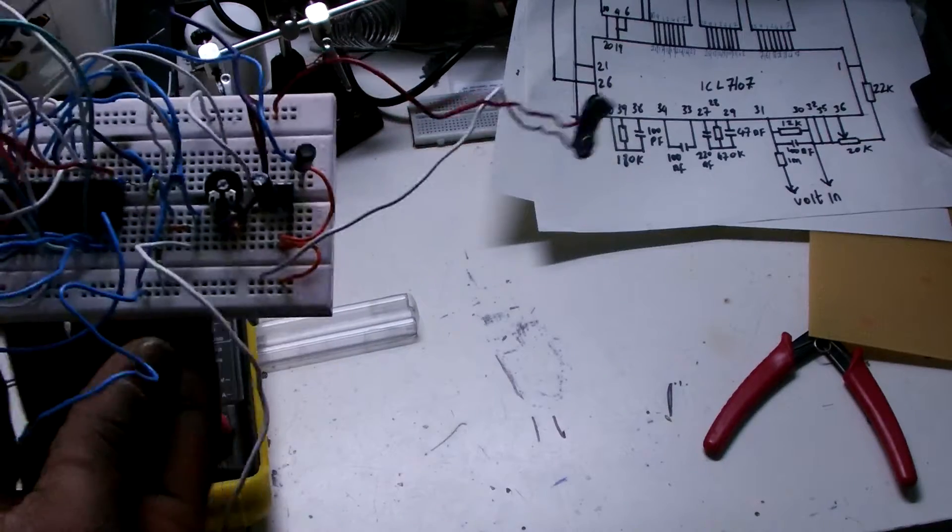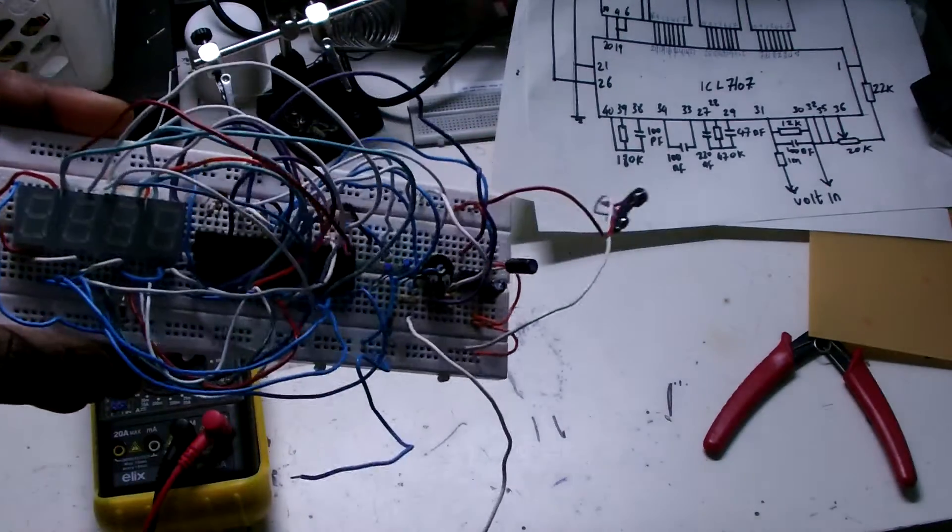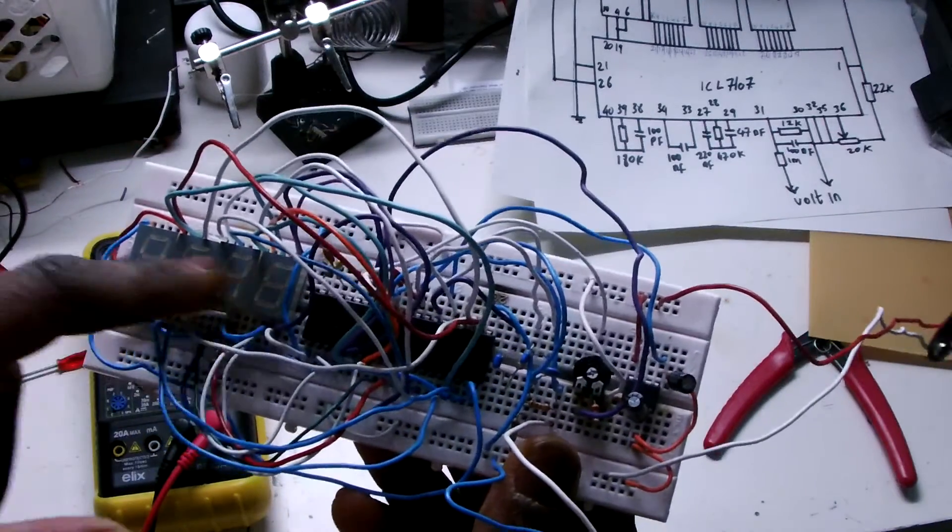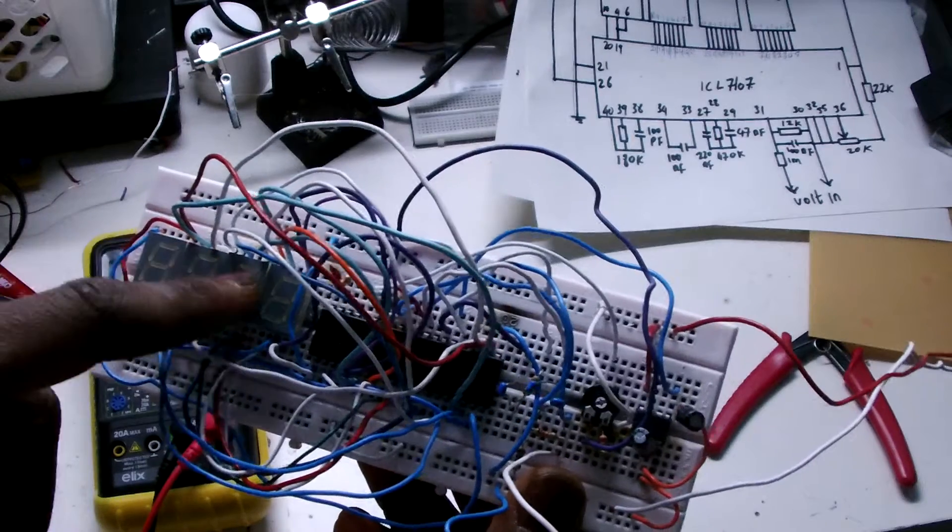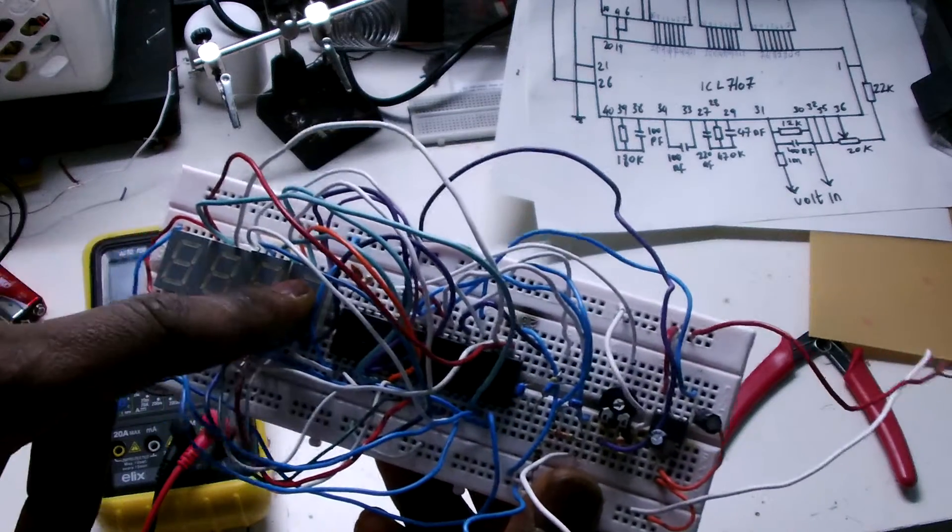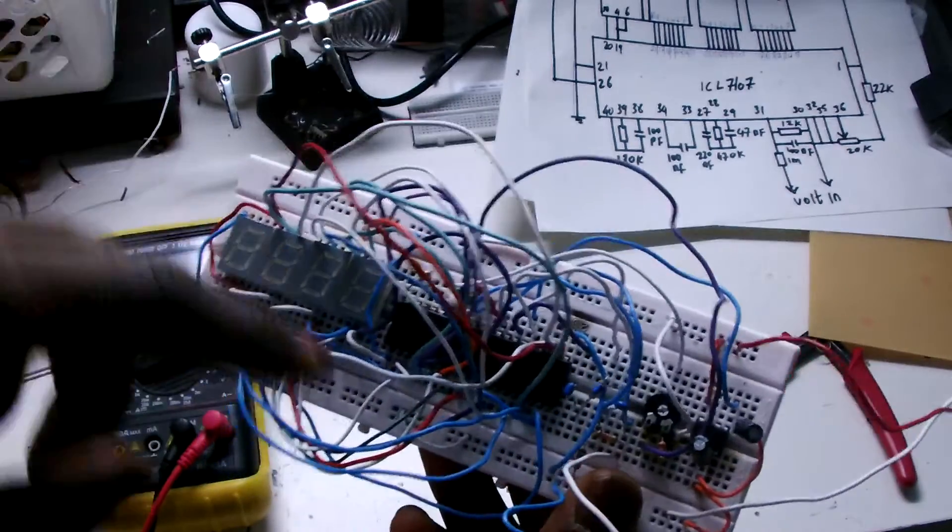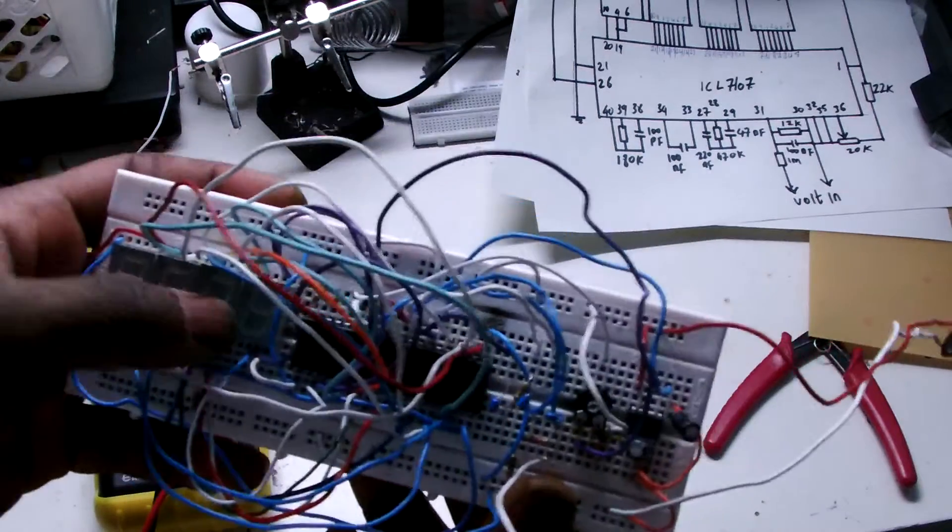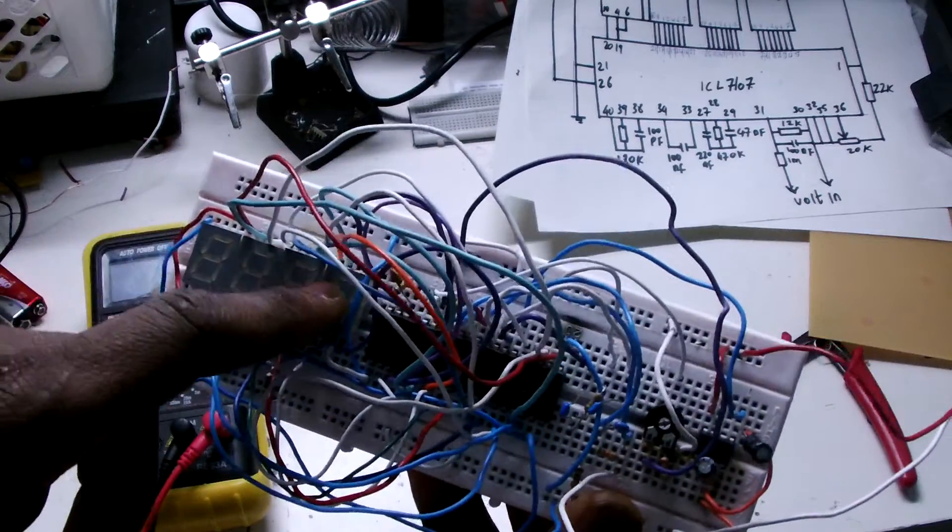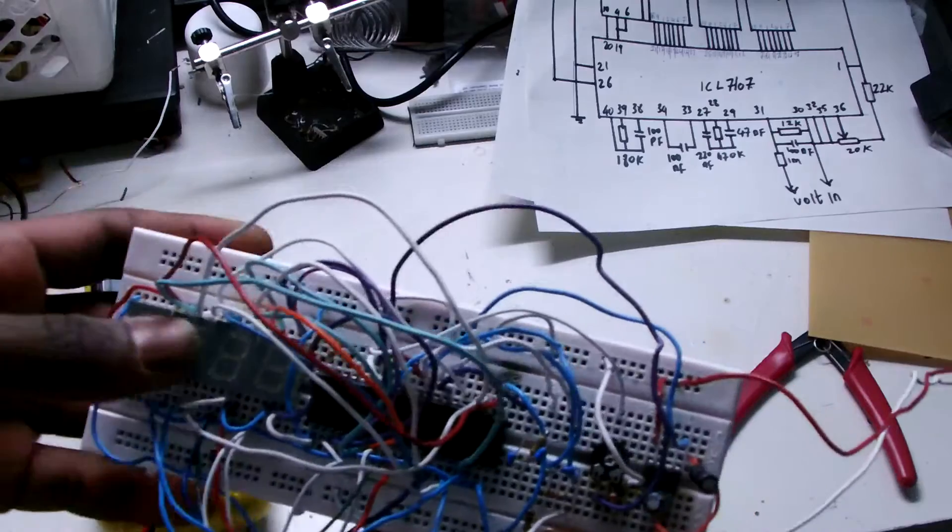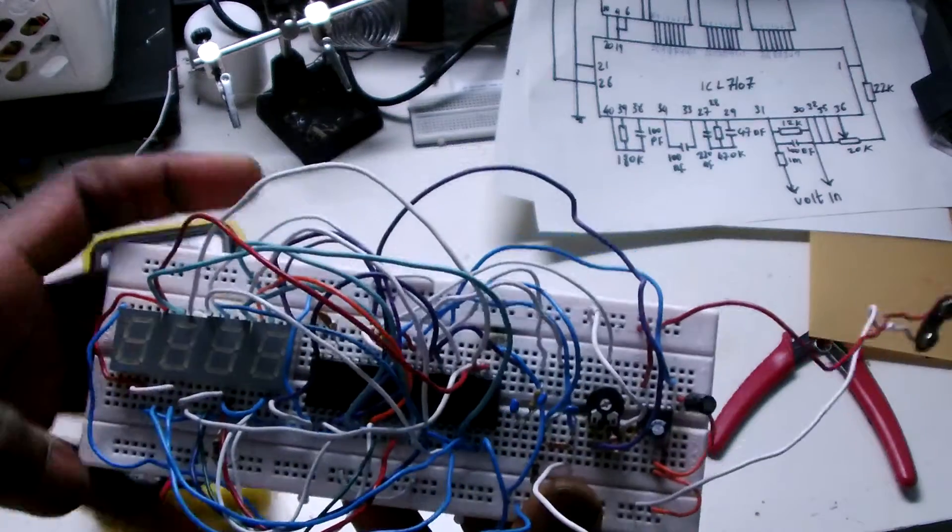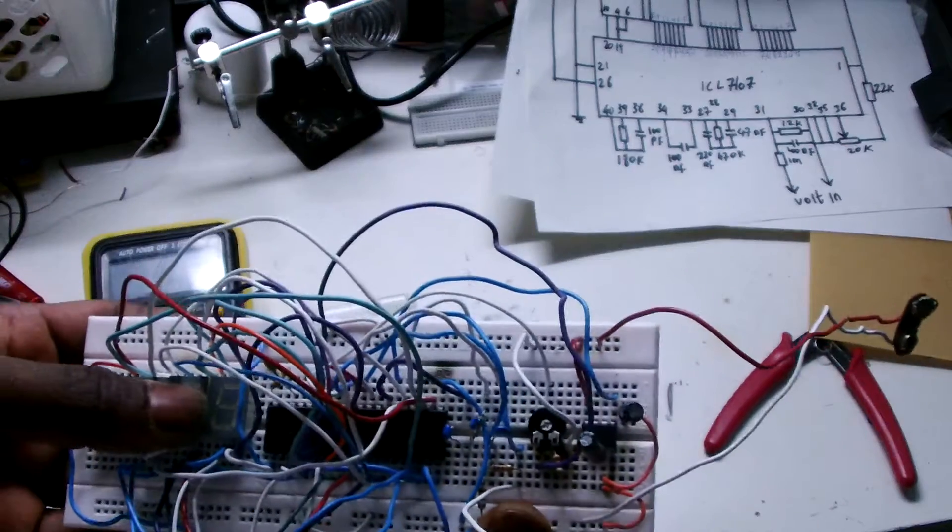I built this circuit before but it didn't work. Actually the problem was with the LED displays, because you have two types: common cathode LED display and common anode LED display. With this circuit you really need to buy common anode, otherwise it won't work. It's very useful information to know when you're going to start building this circuit.